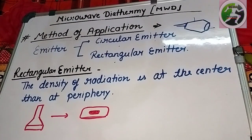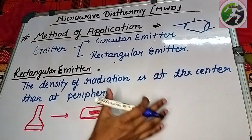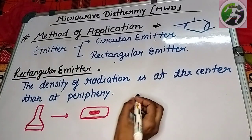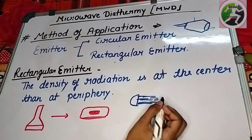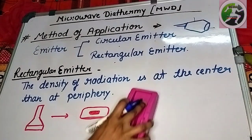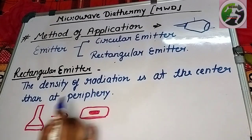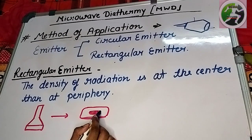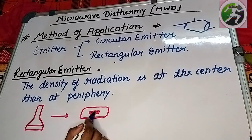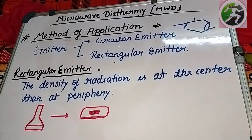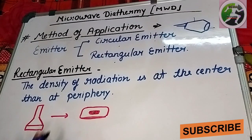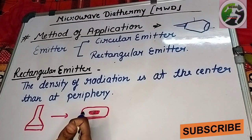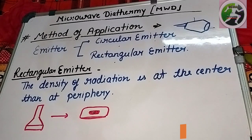The rectangular emitter is rectangular in shape. In this type, the density of radiation is high at the center but very low at the periphery. So in this video we have learned what the therapeutic effects are and what methods and applications are used. I hope you like the video — please like and subscribe. In the next video, we will see the indications and contraindications. Thank you for watching.